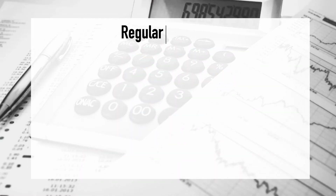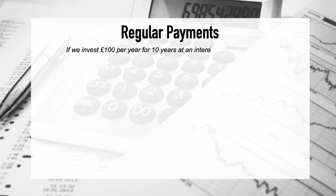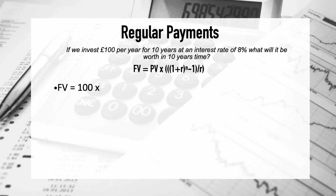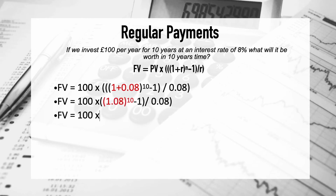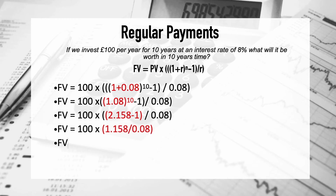Now let's move on to regular payments — how much will we have in X number of years if we invest X amount every single year for X number of years? In this example, we invest £100 per year — not per month — for 10 years at a fixed interest rate of 8% per annum. The formula looks more complicated with lots of brackets, but just work from the inside out, step by step. The answer should be £1,448.66.